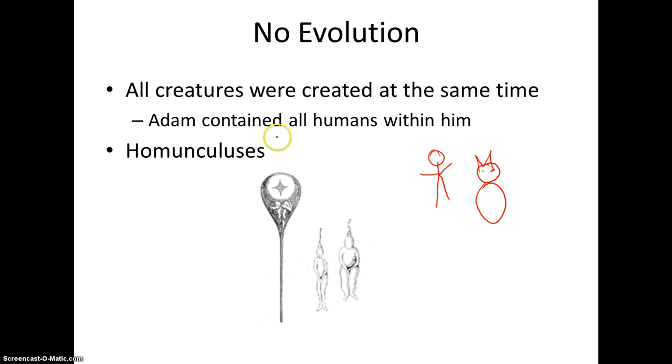Now, to make better sense of this, what this means is that Adam contained tiny human beings within him. And this is a famous drawing right here that was created in 1694 expressing the theory of preformation. And these tiny humans, Adam contained all humans within him. And these tiny humans are called homunculus.